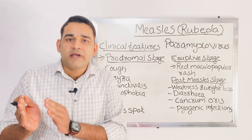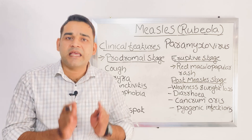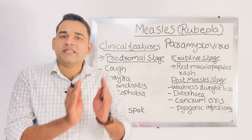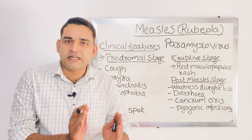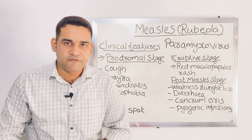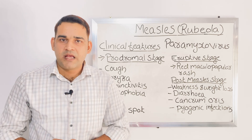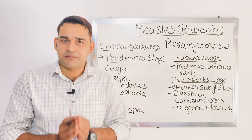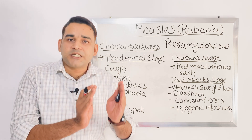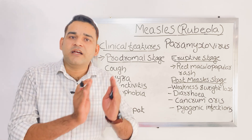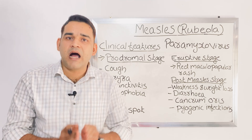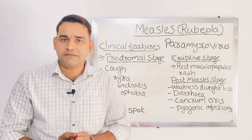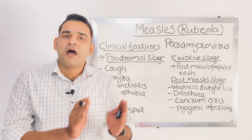Regarding the source of infection, the infected child with measles is the only source of measles — from an infected child, another child gets the infection. Regarding the infective material, it is the discharges from the nose, throat, and upper respiratory tract of the infected child.